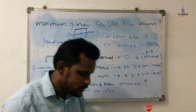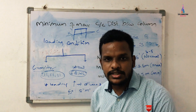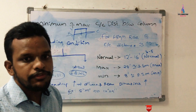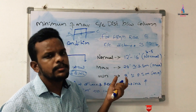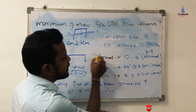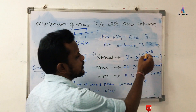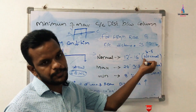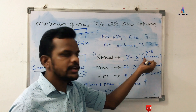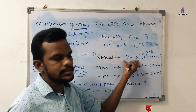The center-to-center distance between columns for a normal loading condition system is 12 feet by 16 feet, which is approximately equal to 3 meters by 5 meters. This is the normal condition system — for example, seismic Zone 2 with low wind loading effect and proper gravitational load values. We consider this center-to-center distance for normal conditions.